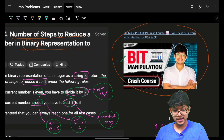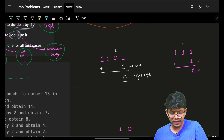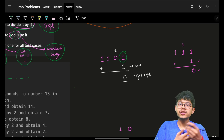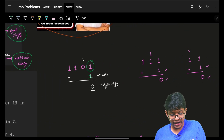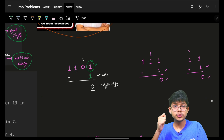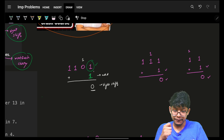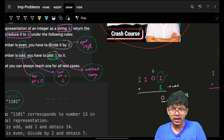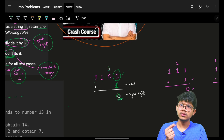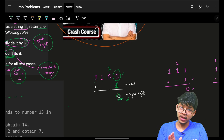Let's trace through the example 1101. The rightmost bit is 1, indicating it is odd, so I add plus one — that's one operation. When the rightmost bit is 1, I add one to it, which turns that bit to 0, making the number even, and then I do a right shift.